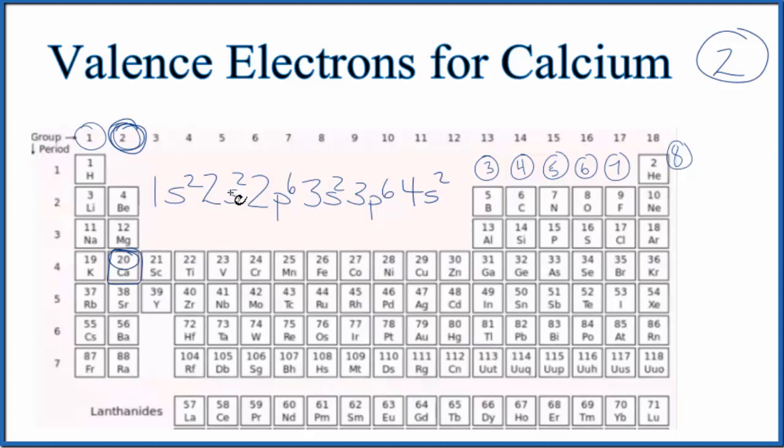But we're only interested in the valence electrons, the electrons in the highest energy level. So here, the highest energy level is this fourth energy level here. Think of it as the outer shell. In the highest energy level, the fourth energy level, there are two valence electrons.